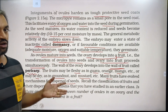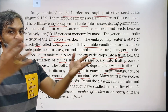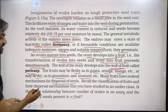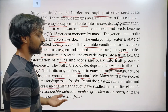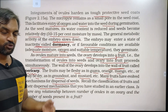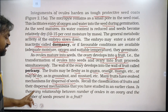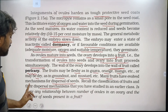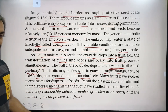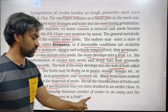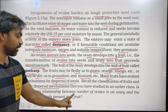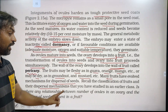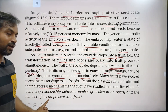Seeds are spread from the parent plant species over a wide area. Recall the classification of fruits and the dispersal mechanisms that you studied in earlier classes. Is there any relationship between the number of ovules in an ovary and the number of seeds present in the fruit? Exactly — one ovary may have one seed or ten seeds depending on the number of ovules.